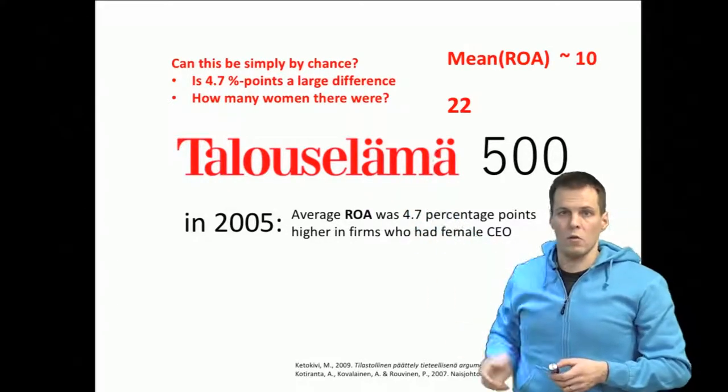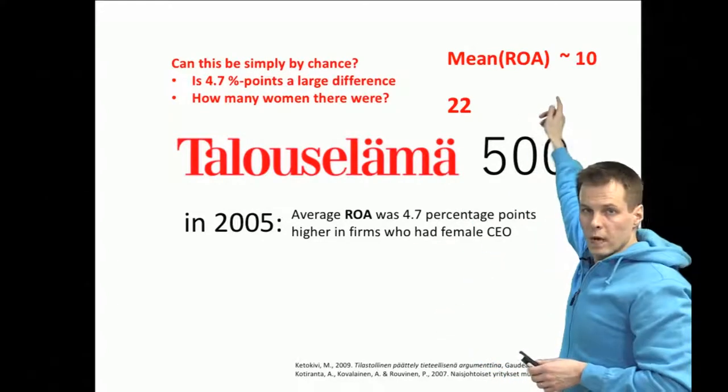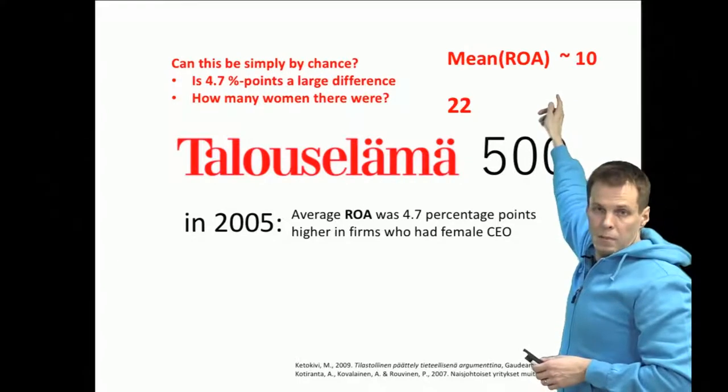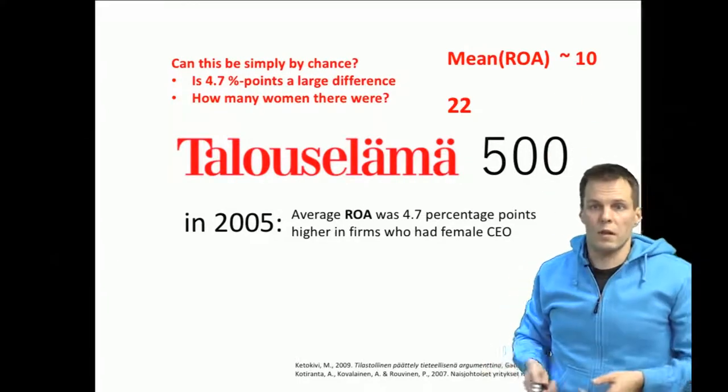And also how is the return on assets distributed. In this example we knew that the mean of return of assets was about 10. So could it be by chance only?